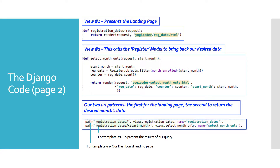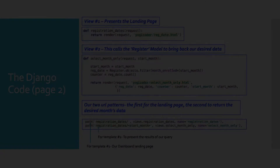We have two URL patterns. The first corresponds to the first view — views.registration_dates — using the path /registration_dates/. The second corresponds to View Number Two, where the path starts with registration_dates and then takes the variable start_month, so if a user selects January or February, the URL can dynamically handle whichever month was chosen.